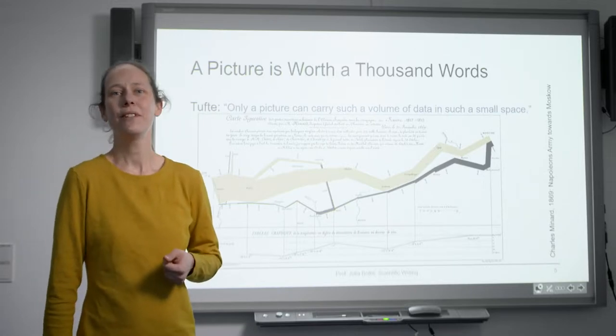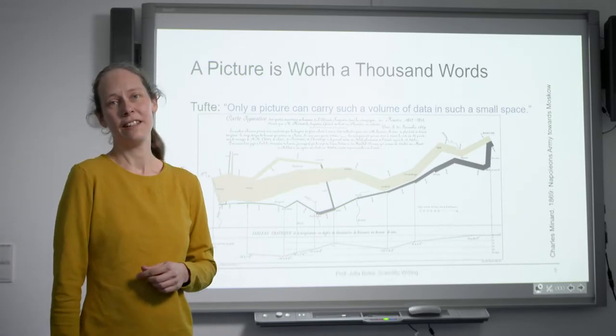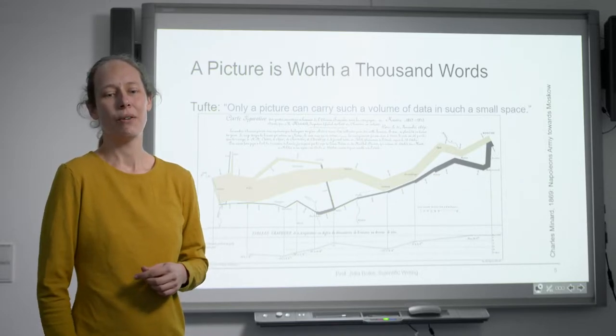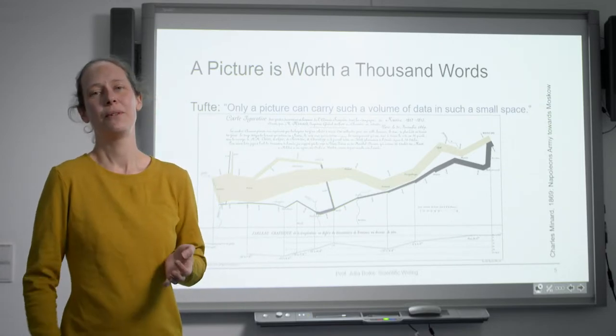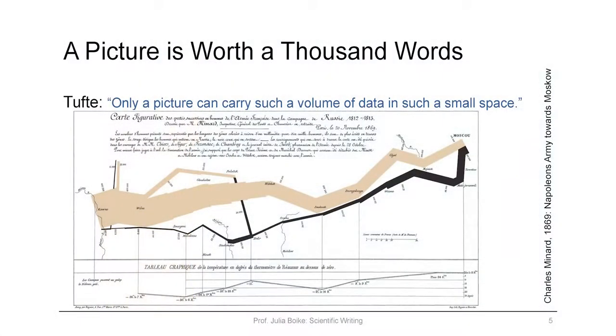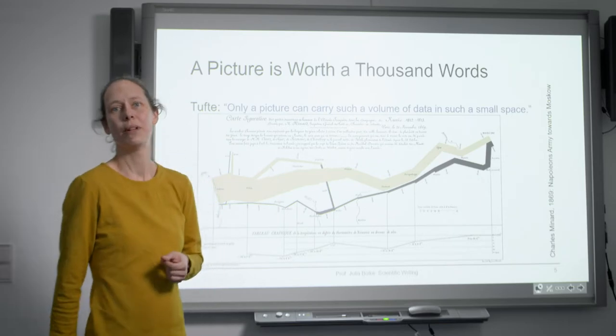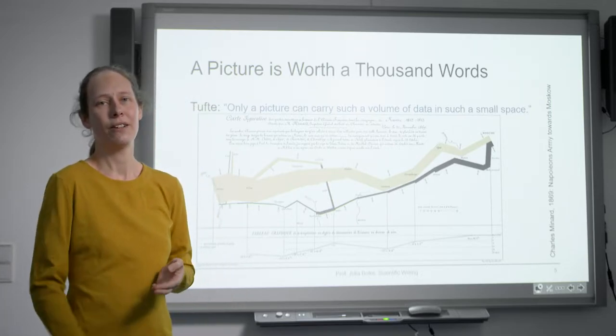Just to start with, the oldest infographic that is known. This is one from 1896 about how Napoleon was marching with his army towards Moscow. I'm sure this is now too small for you to see all the details. But still, this is a very impressive graph. Basically, the line thickness here shows how many people were in Napoleon's army. And you see how they started with a huge army and how it got smaller and smaller until they reached Moscow.